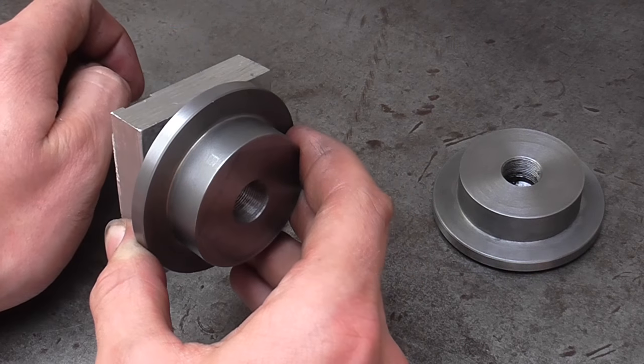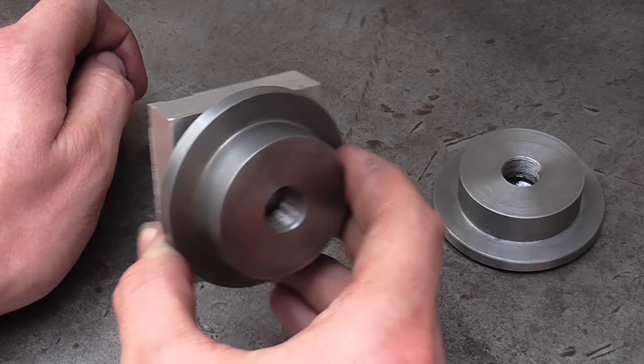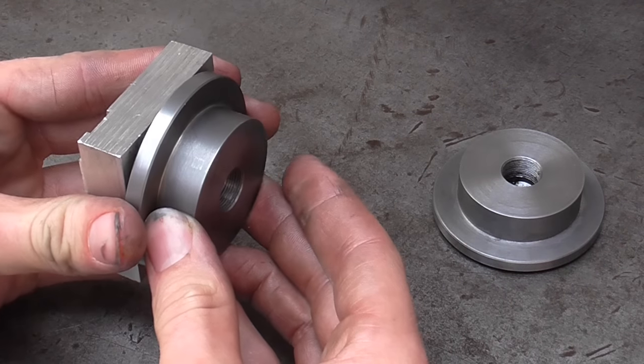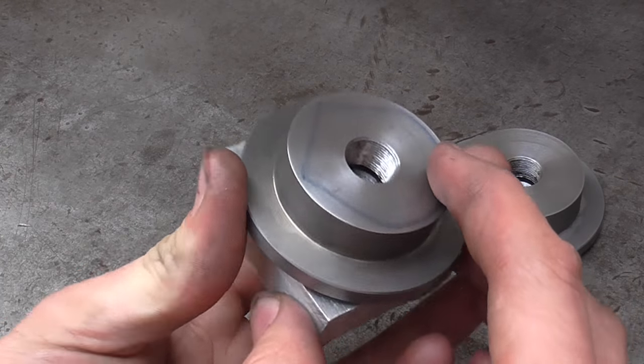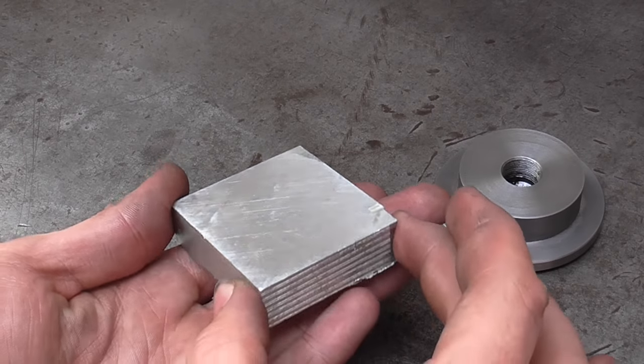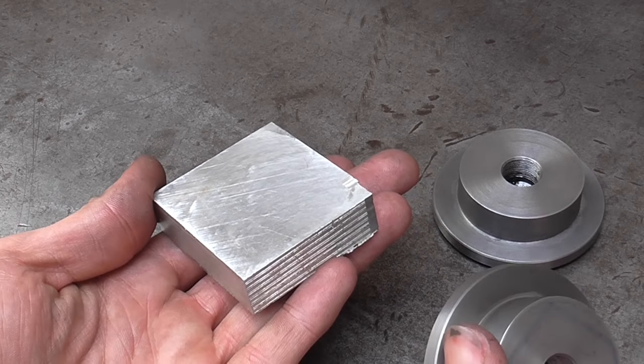Handily the spindle nose on my lathe matches the spindle nose on my dividing head. So after I've turned this I can then mount it on the dividing head vertically and I'll check it with a DTI but it should be pretty well aligned, I can tweak it if it isn't.